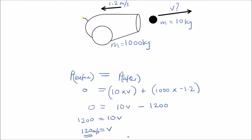So the cannonball flies at a velocity of 120 meters per second in one direction, and the cannon recoils at 1.2 meters per second in the opposite direction. The cannon's recoil in the opposite direction ensures the total momentum is conserved, because their combined momentum works out to zero — the same as before the explosion. The cannon is 100 times heavier than the cannonball, so it moves 100 times slower, and their momentums are equal but opposite, canceling out to zero.